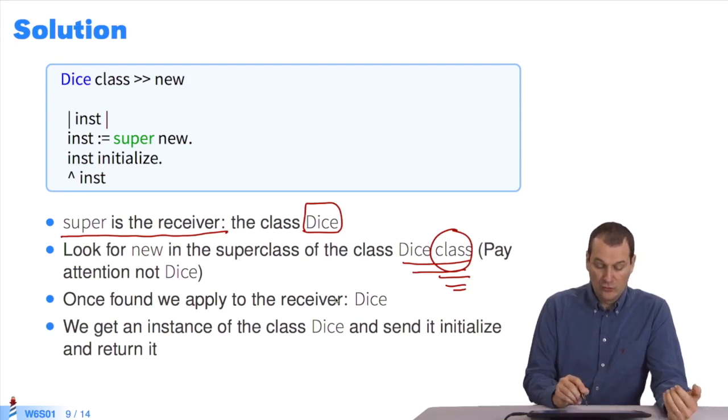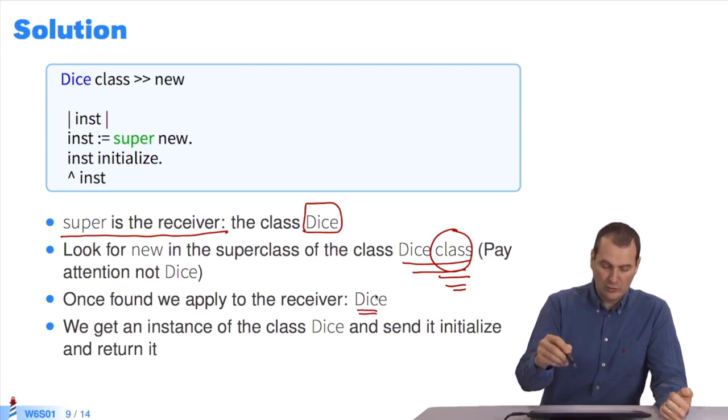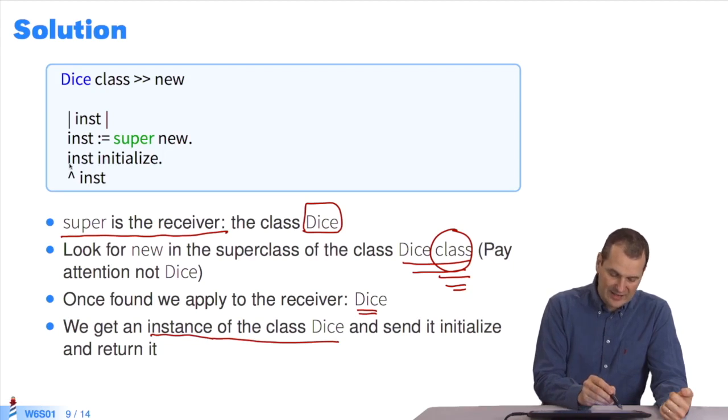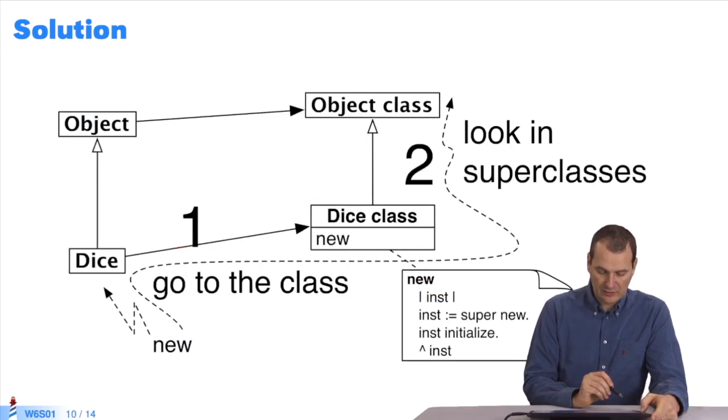Once I've found the new method, I apply it to the receiver, which is Dice. What does this do? I apply new to Dice, which will create and initialize a new instance of Dice. Inst will be my new instance, one Dice. And I will initialize and return it. Let's take a look at a diagram.